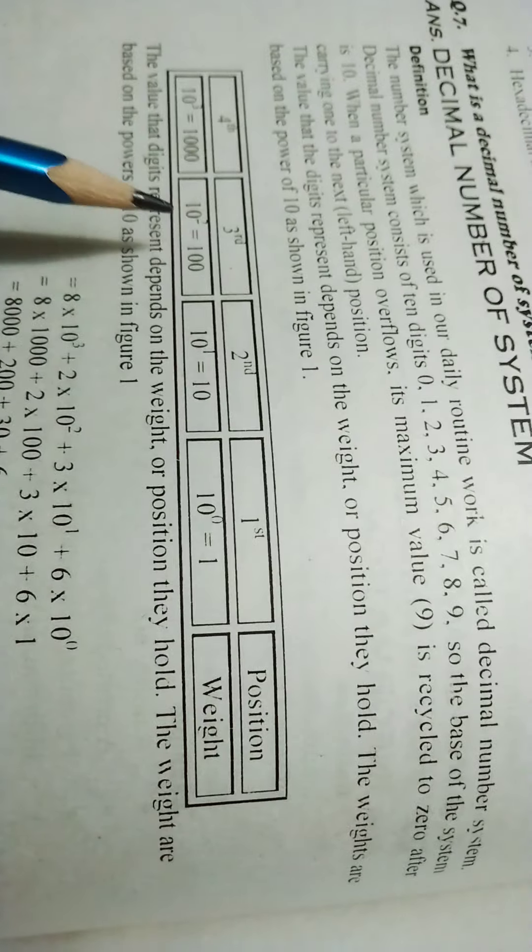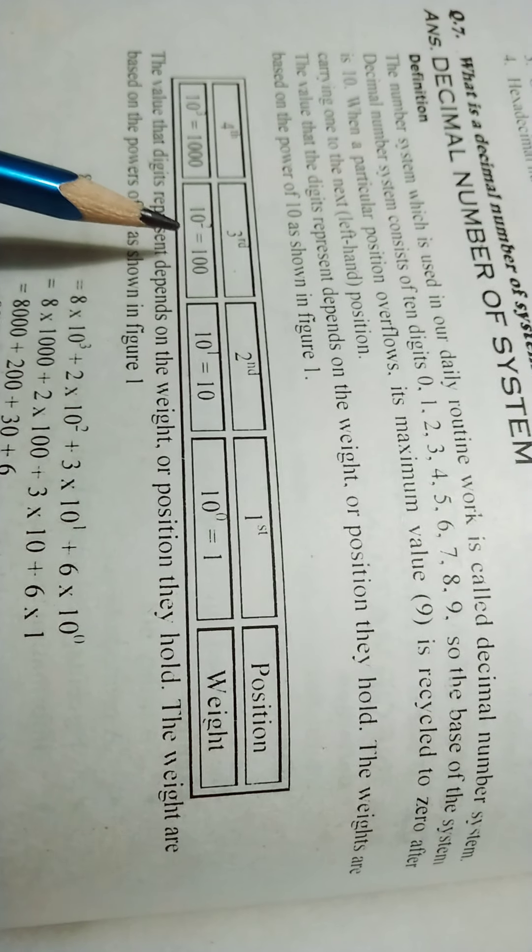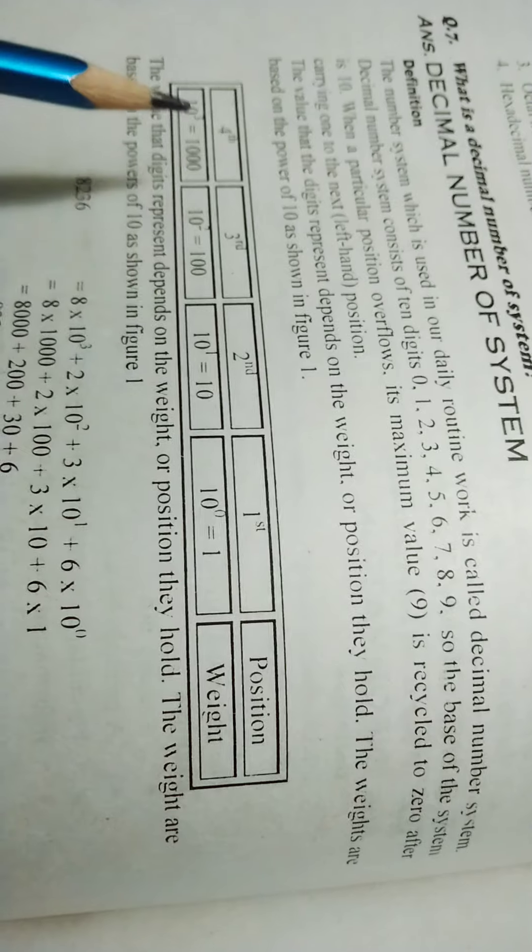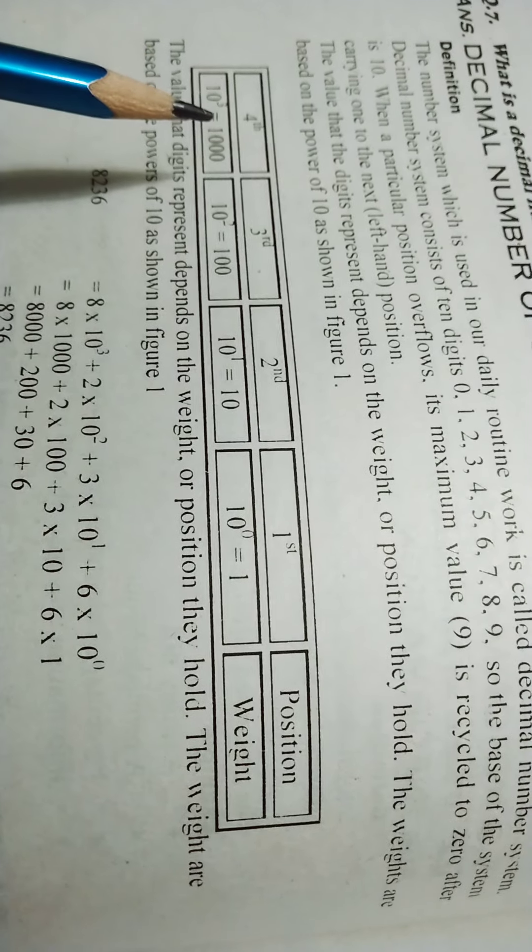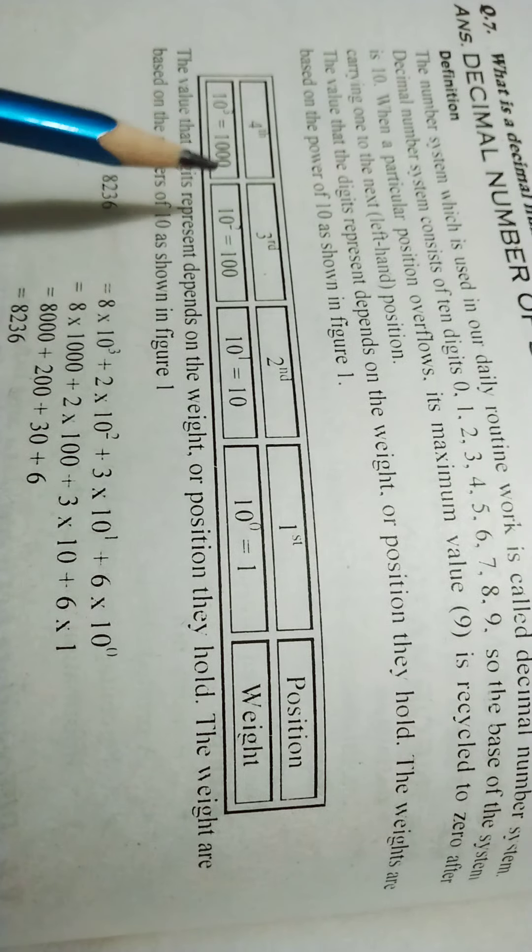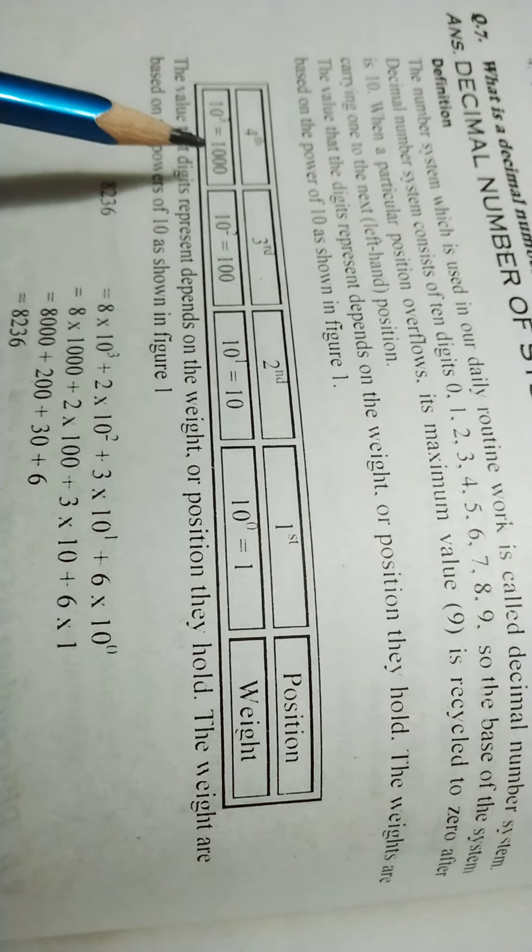10 to the power 2 means 10 multiplied 2 times: 10 tens are 100. 10 to the power 3 means 10 multiplied 3 times: 10 tens are 100, 100 tens are 1000.